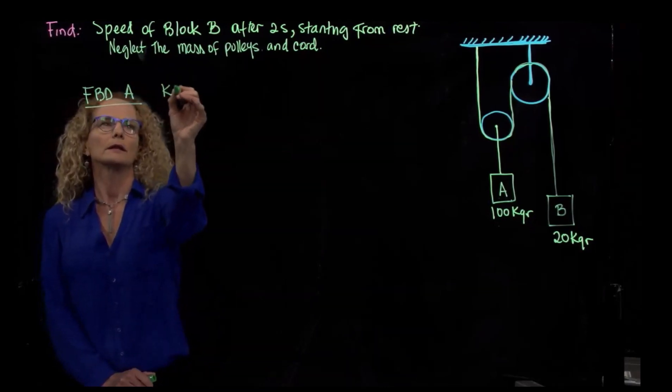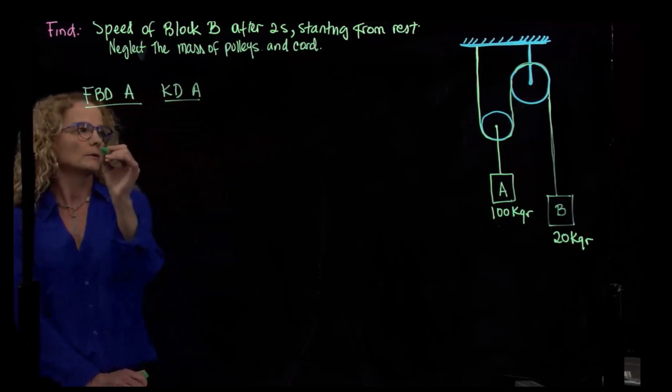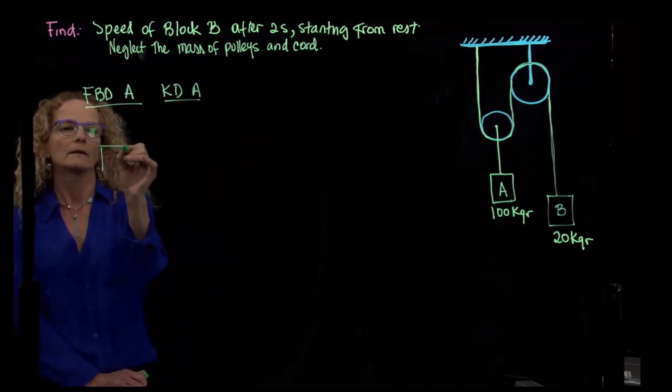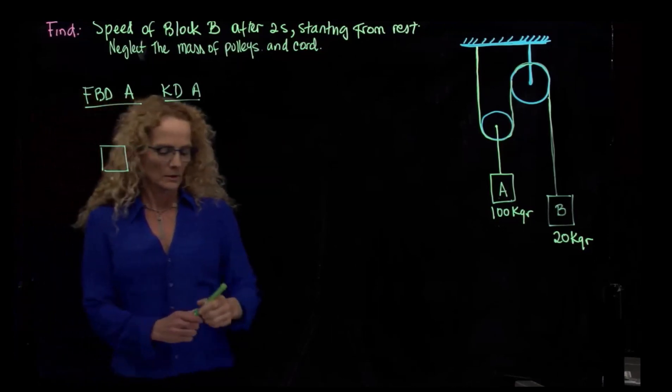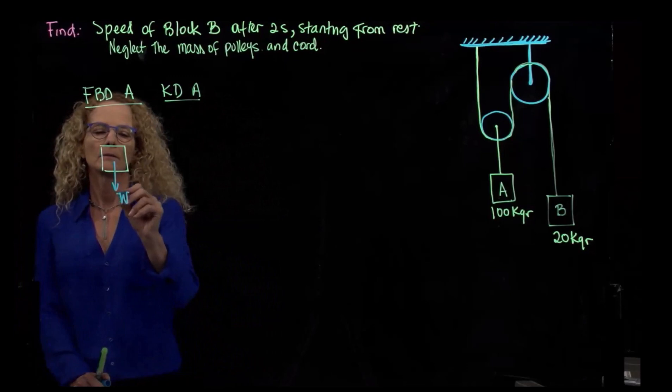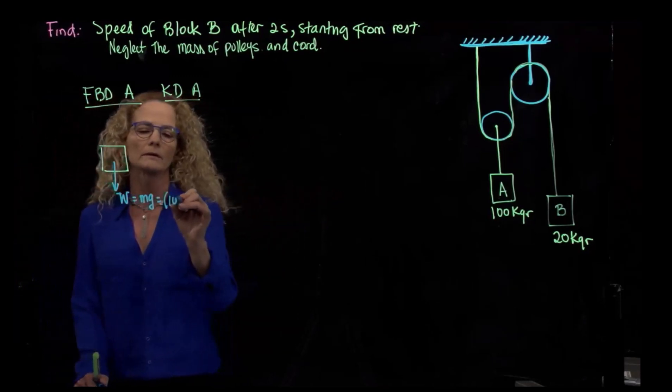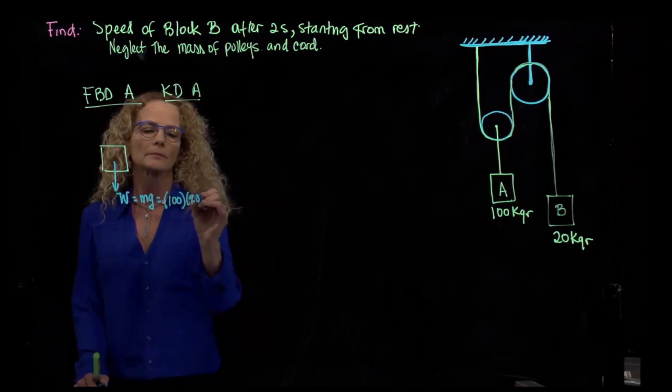So I do the free body diagram of block A and the kinetic diagram of block A as well. If we do our free body diagram from A, it's actually very simple. We have the weight of A, which is mass times gravity. In this case, mass is 100 times 9.81.